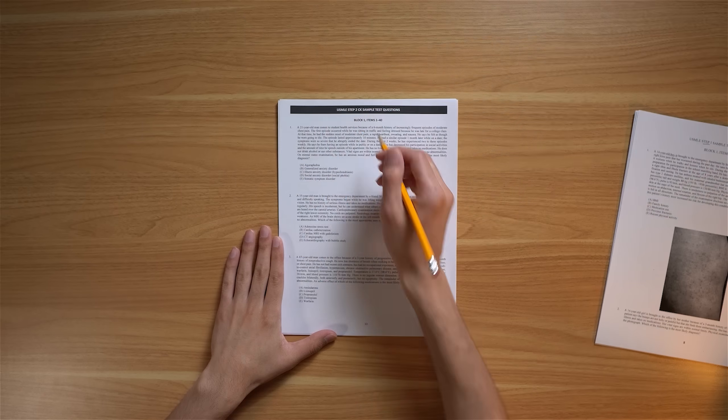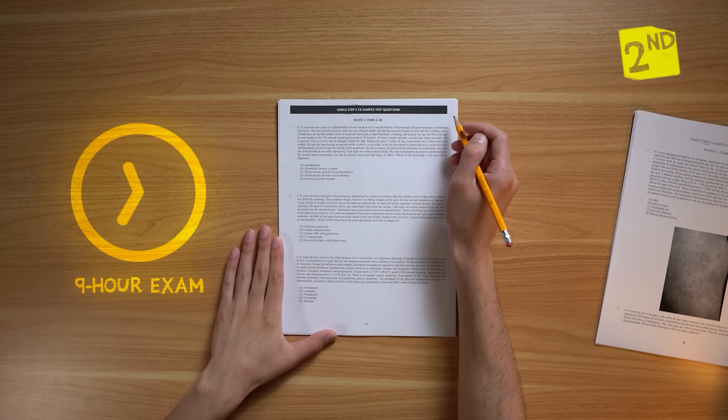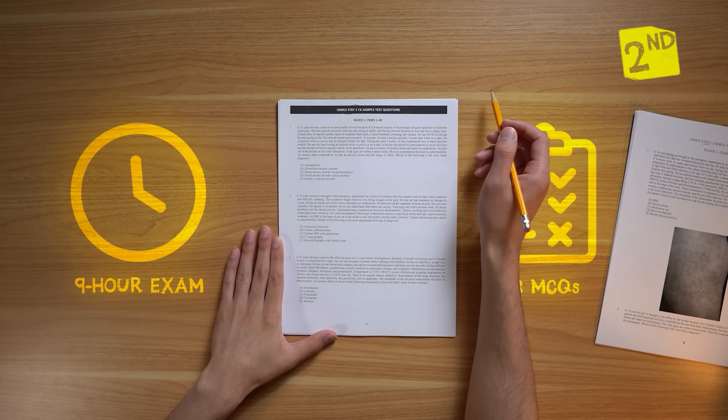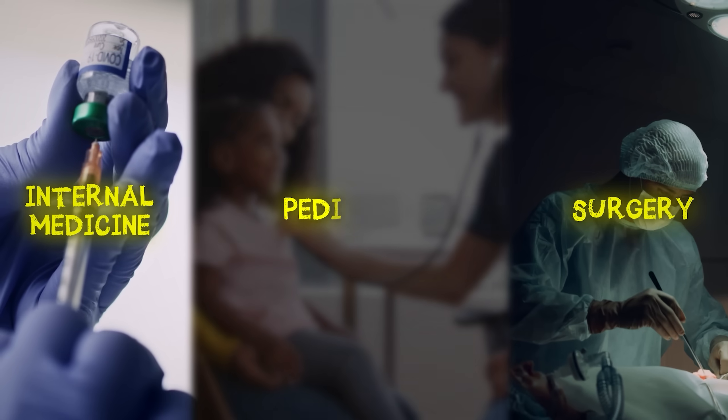Now add one hour because step two is a nine-hour exam that consists of 318 multiple choice questions. And in step two, we're not dealing with basic science concepts anymore. Now we're getting asked about things like internal medicine, surgery, and pediatrics.